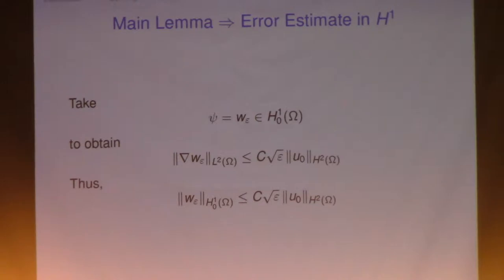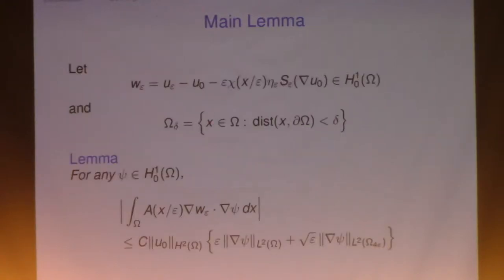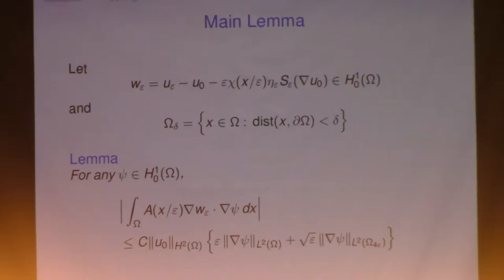So how do you see the second theorem? You simply take your test function to be W_ε, which will be a function in H^1_0 of omega. So you take psi to be W_ε, and you use the ellipticity to bound this from below by the L2 norm of the gradient of W_ε, L2 norm squared.